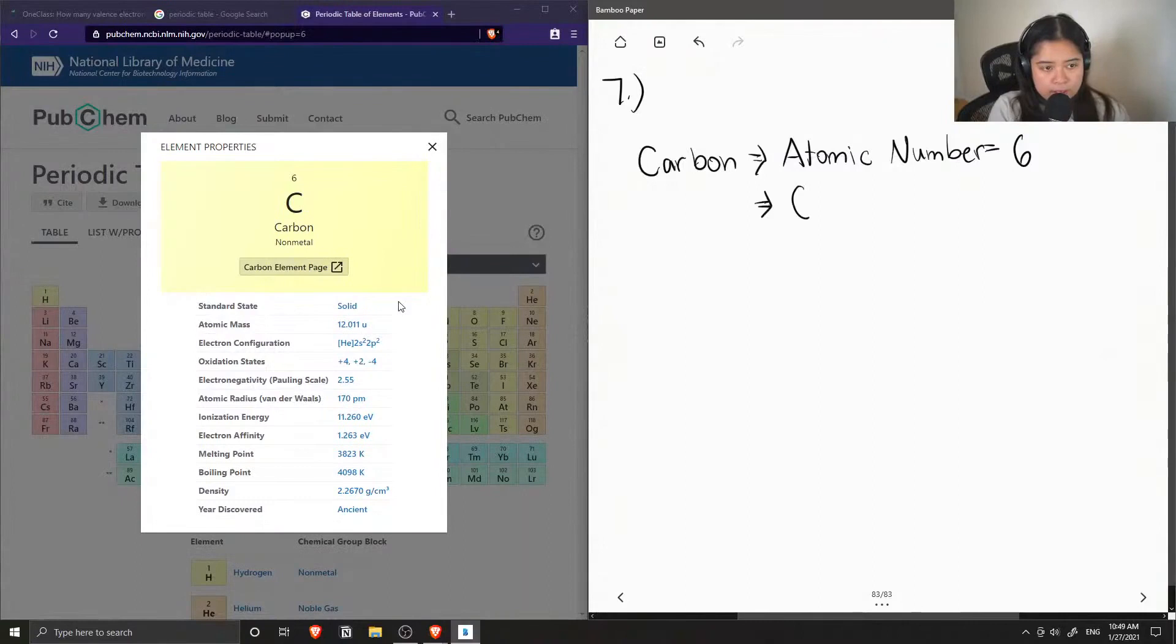So this tells us that carbon contains six protons, and if we have a neutral carbon atom, then we also have six electrons.